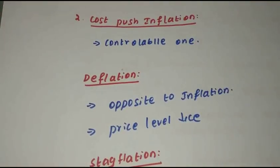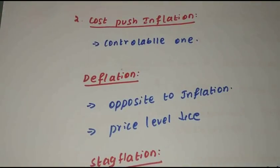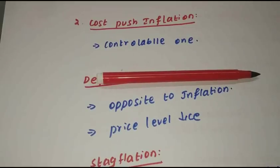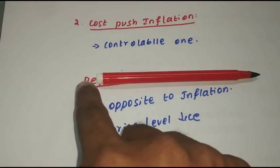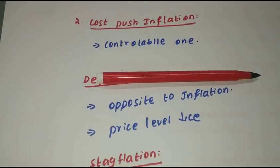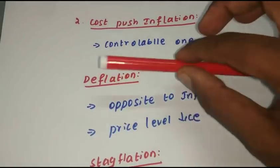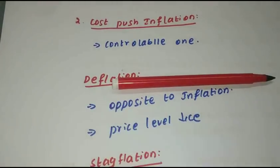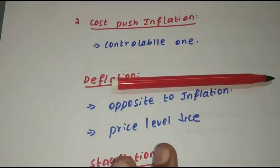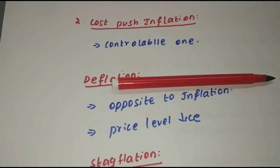Next is cost-push inflation. Cost-push is more controllable. If you have raw material costs increasing, profit margins are affected. For example, a pen — if you have a pen with plastic head and raw materials, the production cost increases. This is cost-push inflation.